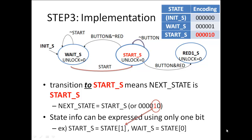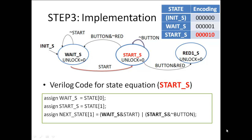Each state is encoded using one-hot encoding. The code for start_s is 000010, meaning the second bit of the state register needs to be set. For wait_s, the zero bit corresponds to all zeros. We can write next_state[1] using the Verilog expression just derived. Initially the system is in wait state, so state[0] is set, and next_state[1] is defined by the given expression for the start state transition.